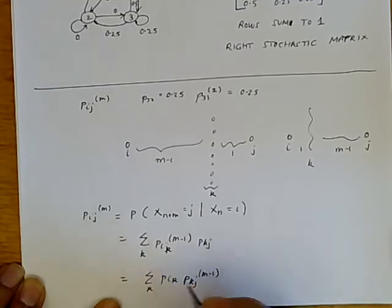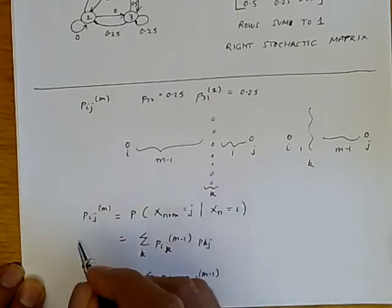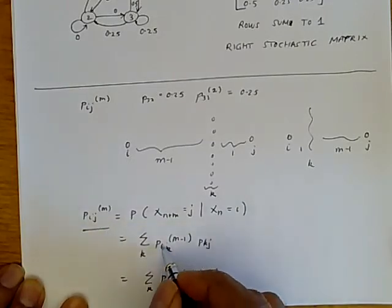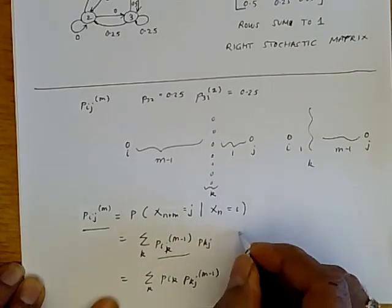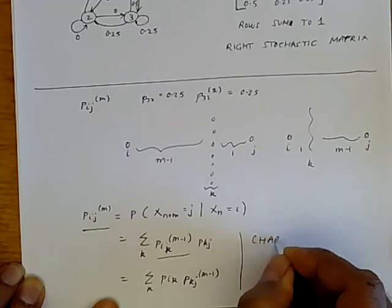So these are both ways of doing it. As you can see, it's a recursive relationship that basically writes Pij in m steps in terms of Pik in m minus one steps. This makes life somewhat easier. These two sets of equations, which are equivalent, are called the Chapman-Kolmogorov equations.